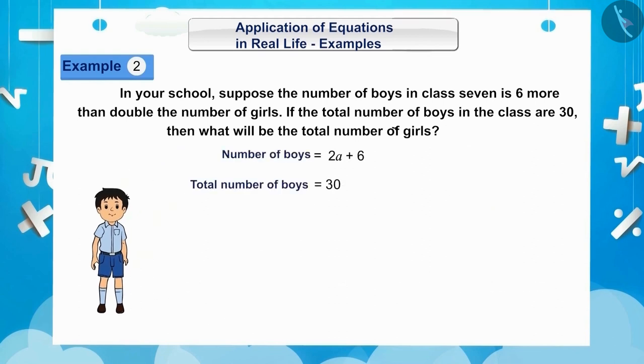In our question, it is given that the total number of boys are 30. Then, our equation will be something like this. 2A plus 6 is equal to 30. Let's solve it and find the total number of girls.